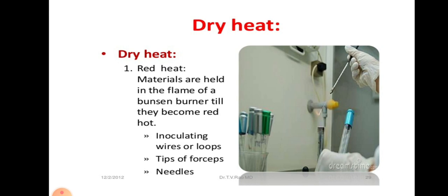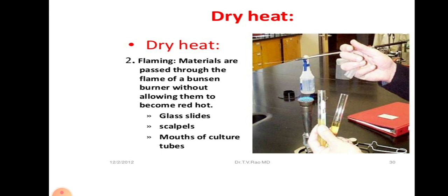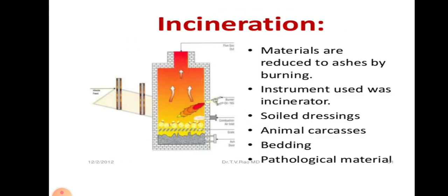The second dry heat method is red heat. Here, materials are held in the flame of a Bunsen burner till they become red hot. Inoculation loops and wires are sterilized by red heat. Similarly, forceps and needles are also sterilized using red heat. The third mechanism is flaming. Here, materials are passed through a flame of a Bunsen burner without allowing them to become red hot, like glass slides and scalpels. Mouths of culture tubes or test tubes are flamed before transferring culture from one test tube to another. Incineration is another method where materials are reduced to ashes by burning using an incinerator. Soiled dressings, animal carcasses, bedding and pathological materials are incinerated to ashes.